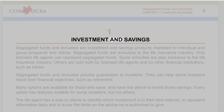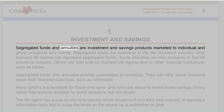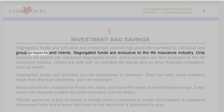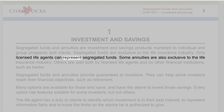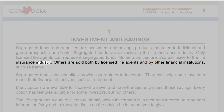Investment and Savings. Segregated funds and annuities are investment and savings products marketed to individual and group prospects and clients. Segregated funds are exclusive to the life insurance industry, and only licensed life agents can represent segregated funds. Some annuities are also exclusive to the life insurance industry, while others are sold both by licensed life agents and by other financial institutions such as banks.